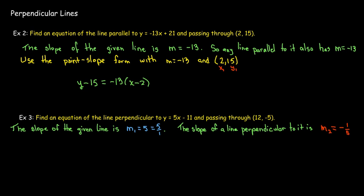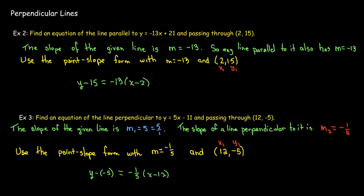And, again, I'm given a point. I know the slope of the line. I can use the point slope form. Again, I don't like to leave this minus and minus. So, let's go ahead and clean that up. And I'll have y plus 5 equals negative 1 fifth parentheses x minus 12.